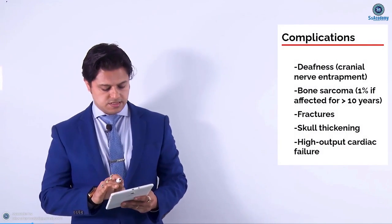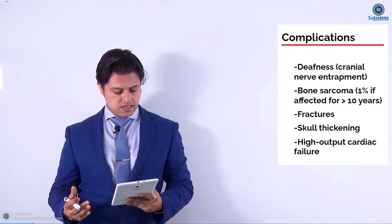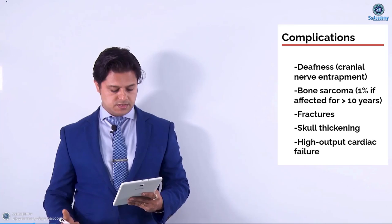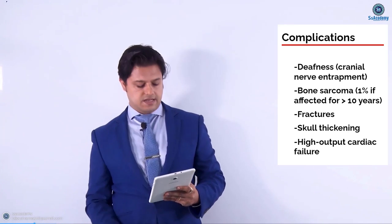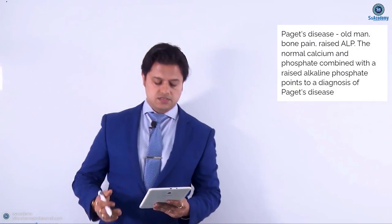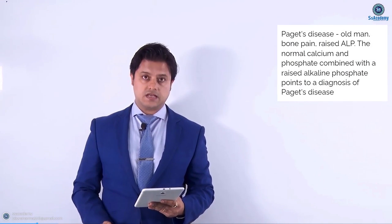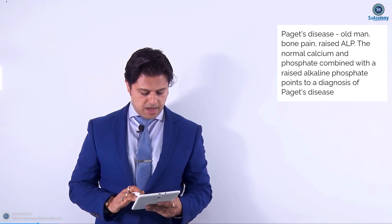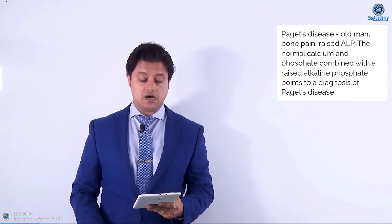Complications are really important: deafness, cranial nerve entrapment, and bone sarcoma - specifically osteogenic sarcoma - affecting one person after more than ten years of disease. Also fractures, skull thickening, and high output cardiac failure. In summary, Paget's disease presents as an elderly man with bone pain, raised alkaline phosphorus, and normal calcium and phosphate combined with raised alkaline phosphatase - that points to a diagnosis of Paget's disease.